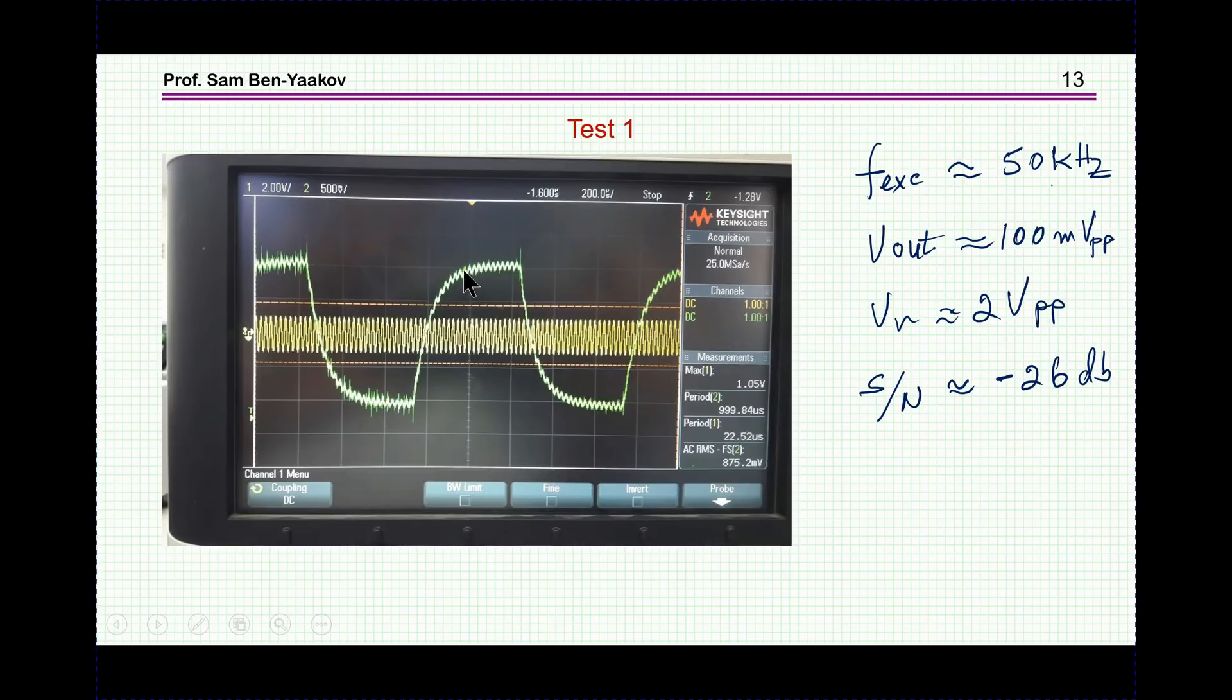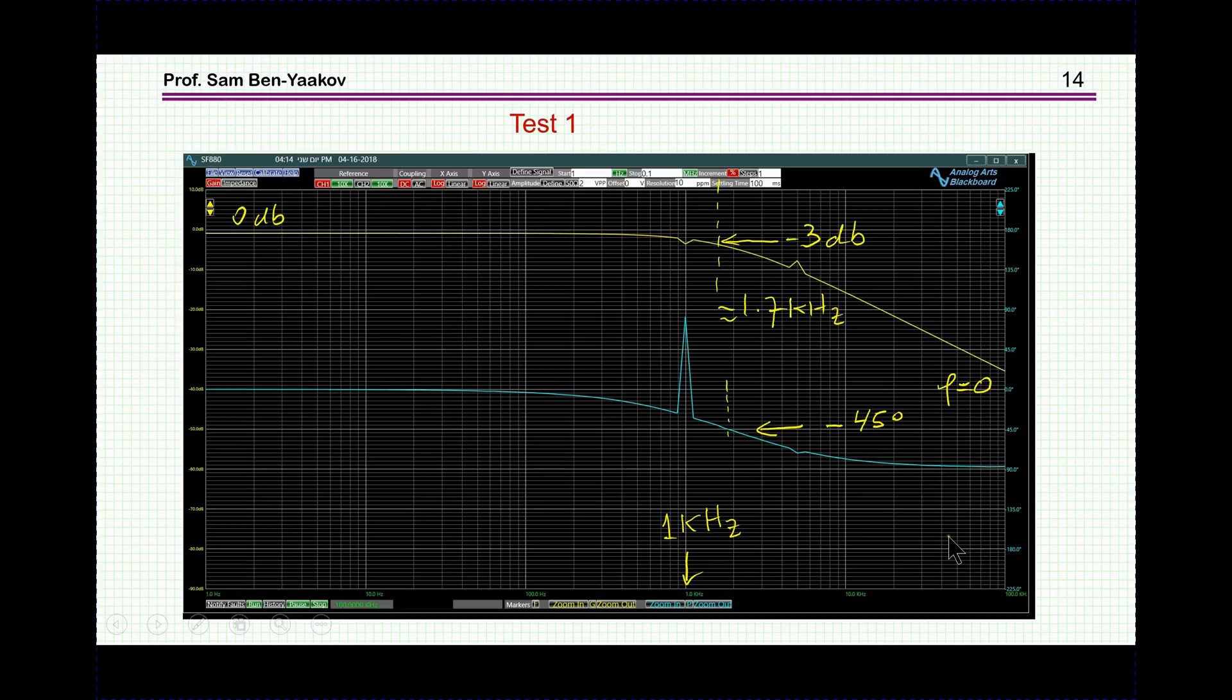And here it is at high frequency. This is 50 kilohertz. Now we see very large interference signal. Imposed on it, or added to it, is the little remnant of the excitation from the frequency response analyzer. This is after passing the low-pass filter. The breakpoint is 1.7 kilohertz. So at 50 kilohertz it's attenuating it pretty much. And what is left here is about 100 millivolt peak to peak. And comparing it to this total noise, so to speak, we are getting minus 26 dB of signal-to-noise ratio.